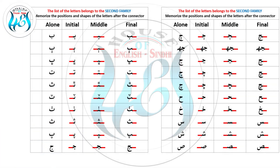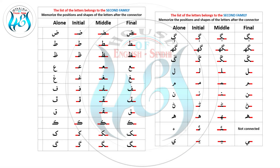The second family takes the connector before and after the targeted letters. Look how I use the connectors to join letters with other letters to make a new word. But you have to memorize the families first.